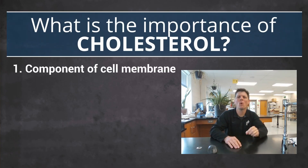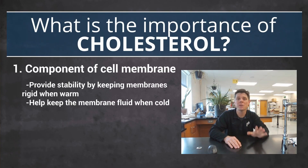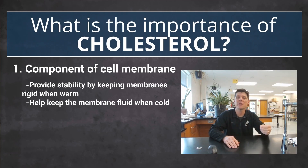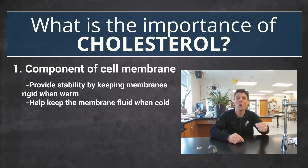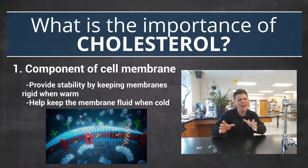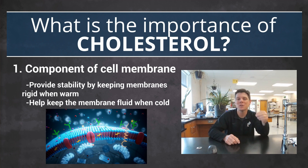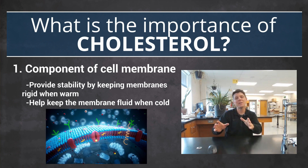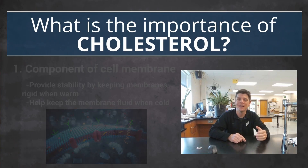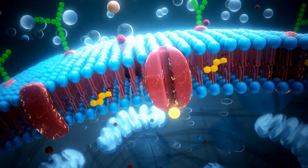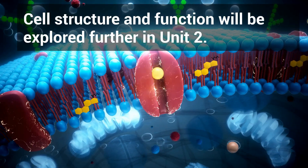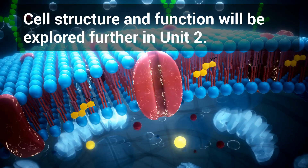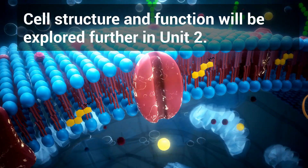Cholesterol plays an important role in providing structural stability to animal cell membranes. The membranes themselves consist of phospholipid molecules that group together to form a lipid bilayer — like a sandwich, with one phospholipid layer forming the exterior part of the membrane and a second phospholipid layer forming the interior. Cell membranes play a very important role in homeostasis by regulating the passage of materials into or out of cells.